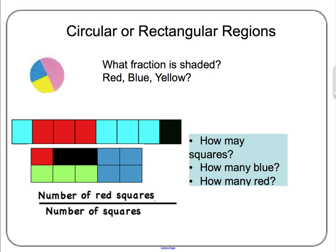Then we do something with those parts — for example, we color them red — and then we write a number: the number of red squares over the number of equal parts altogether. On the rectangle on top, the number of red squares is 3 and the total number of squares is 8. On the bottom rectangle, the number of red squares is 1 and the total is 10, so 1 out of 10 is red.